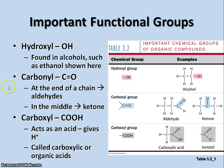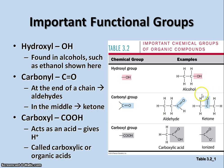The second functional group is a carbonyl — a carbon with a double-bonded oxygen on it. If the carbonyl is found at the end of the chain, it forms a compound called an aldehyde, like formaldehyde, which is commonly used as a preservative for formerly living tissue. If it's found in the middle of the chain, that forms a molecule called a ketone, and they have different functions.